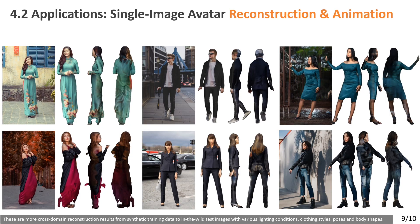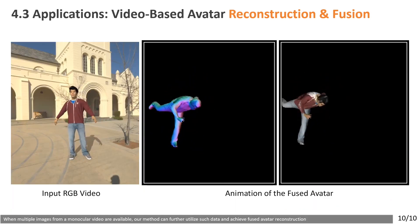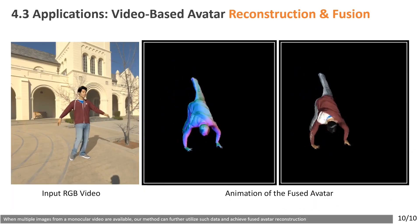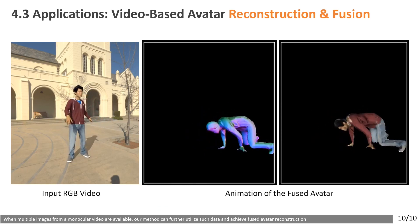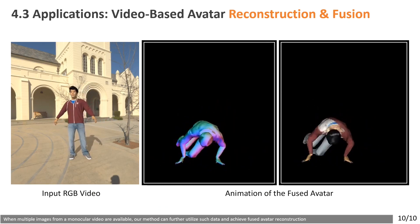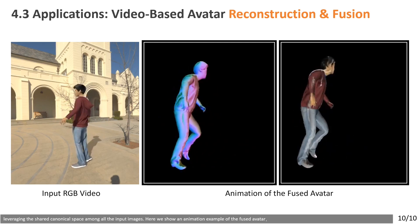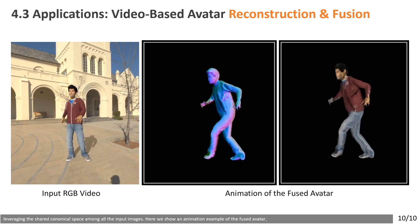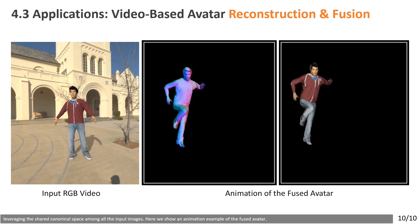These are more cross-domain reconstruction results from synthetic training data to in-the-wild test images with various lighting conditions, clothing styles, poses, and body shapes. When multiple images from a monocular video are available, our method can further use such data to achieve fused avatar reconstruction. Leveraging the shared canonical space among all input images, here we show an animation example.